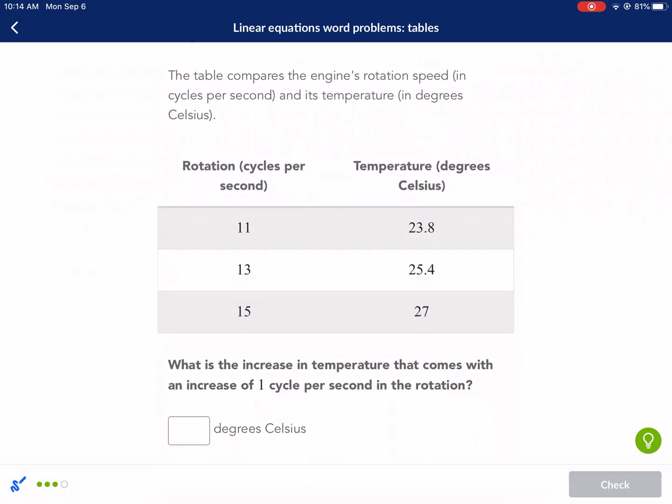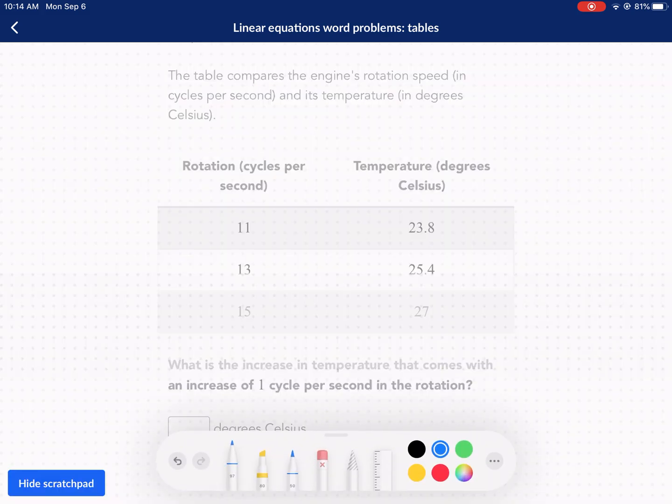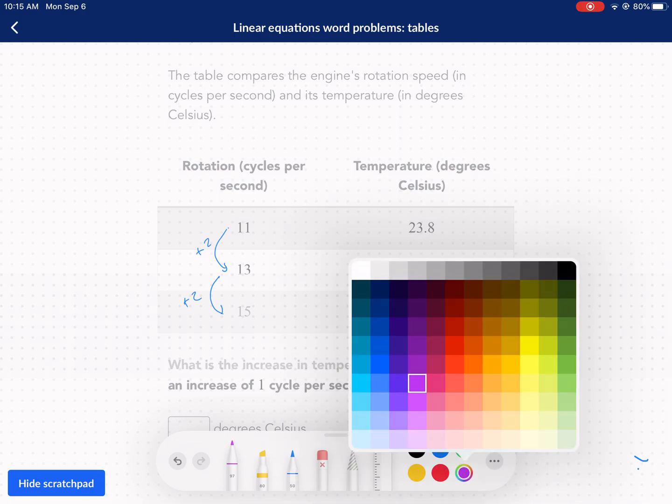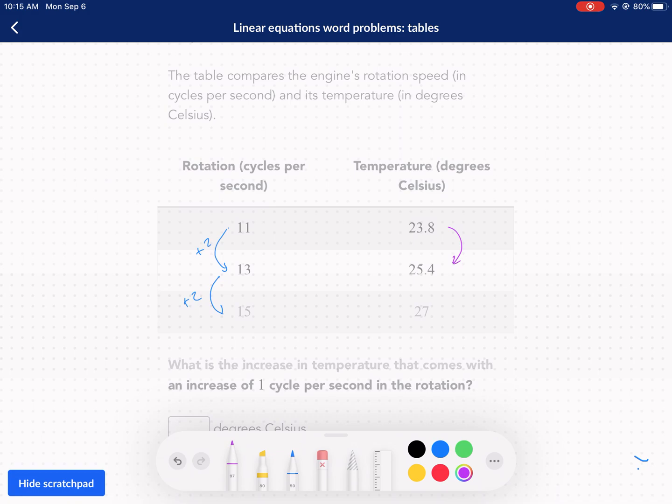All right. The table compares the engine's rotation speed and its temperature. So kind of similar thing. Rotation is going to be the independent variable. Temperature is dependent, but for all these problems, by the way, you can always use the table, but sometimes table just takes a little bit longer. That's why I like figuring out the pattern. What is the increase in temperature that comes with an increase of one cycle per second, the rotation. Let's first find the rate of each, the increases. So this is going up plus two, plus two. At the same time, this is going up and we need to do subtraction here, 25.4 minus 23.8. And that tells us that this is going up plus 1.6. And that pattern stays consistent because again, these are all linear. So plus 1.6 plus 1.6.